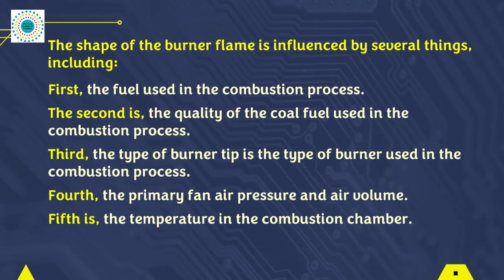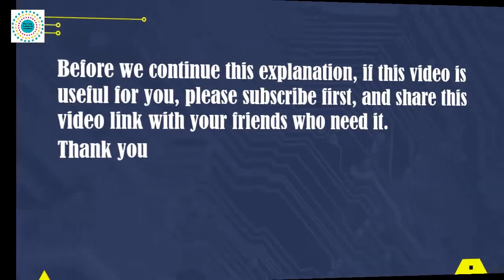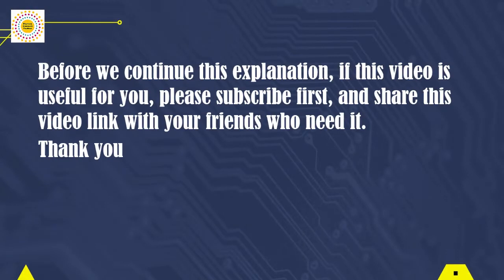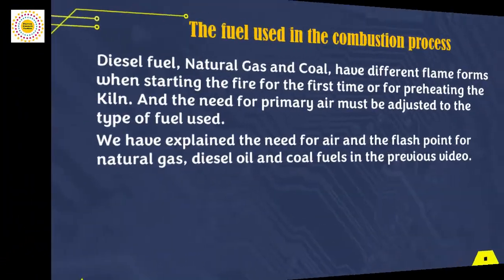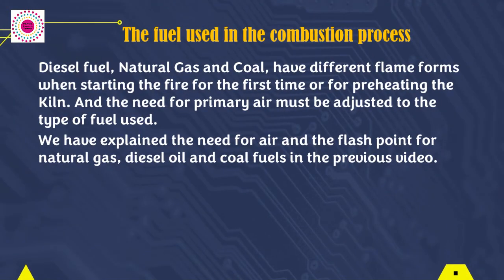If all of these points are explained one by one, it will require a long duration of discussion, so in this video we will only explain in general terms. Diesel oil fuel, natural gas, and fuel coal have different flame forms when starting the fire for the first time or for preheating the kiln.